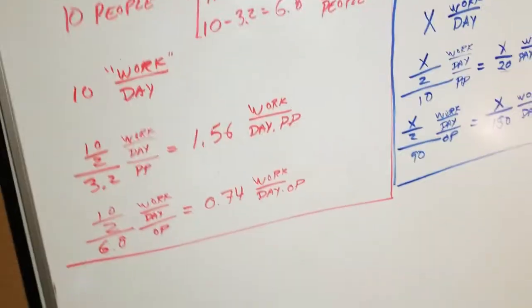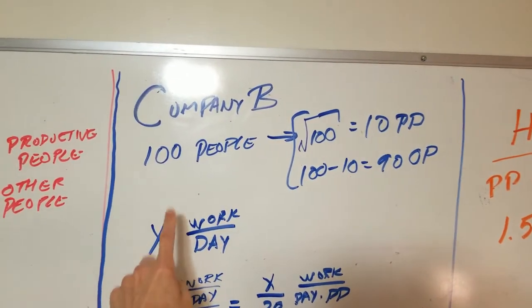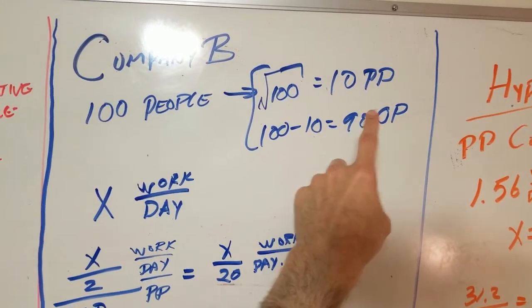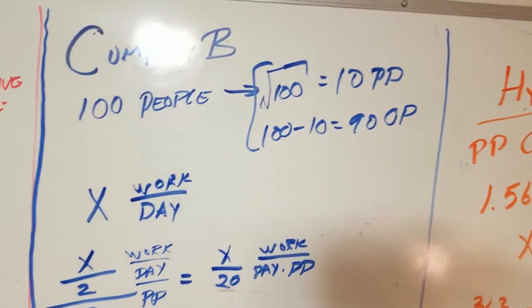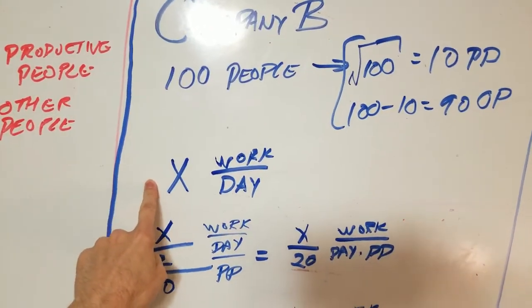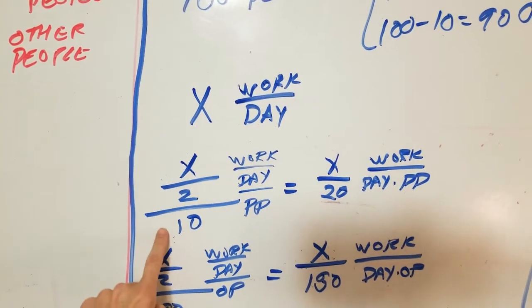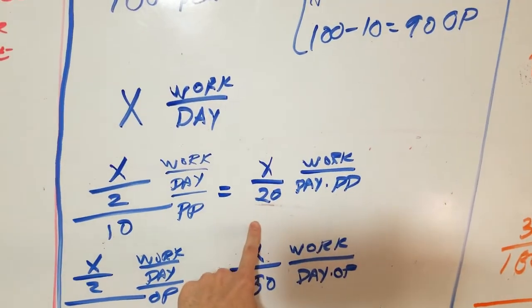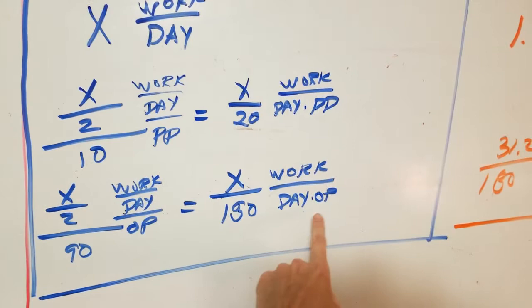Imagine, though, that we have another company, company B. Company B is 10 times the size, with 100 people, meaning square root of 100, or 10, are the productive people. And 100 minus 10, or 90, are the other people. I don't know how much work this company does, so let's just say it does X units of work per day. That means X over 2 divided by 10 is the work per day per productive person, or X over 20. The other people perform X over 2 over 90 work per day of other people.